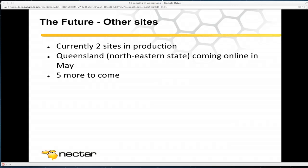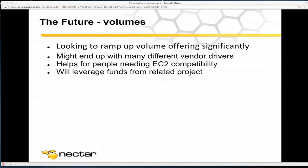We've actually got only two sites in production currently — Melbourne University and Monash University. We're going to be putting on one of the Queensland sites in two weeks' time and then five more to come after that. It's an exciting time growing the cells infrastructure. We also currently don't provide any volumes, so that's something we're going to be looking into in the next round. We have lots of people that need this for EC2 compatibility — they're using EC2-specific code that uses volumes and they want to use our cloud.